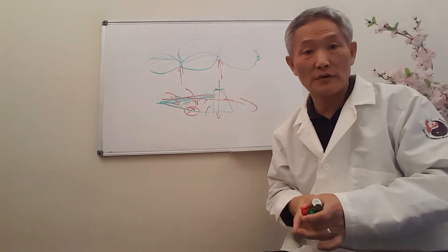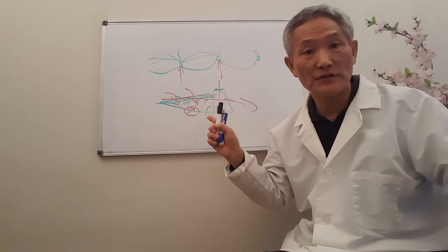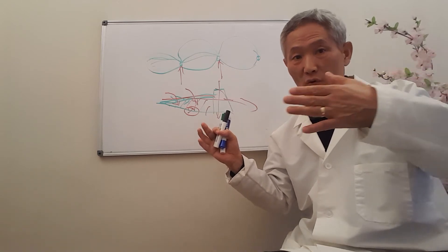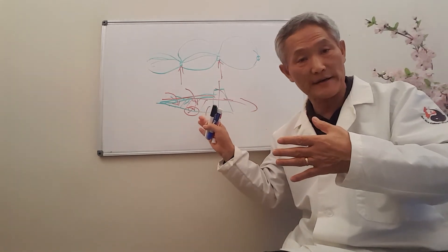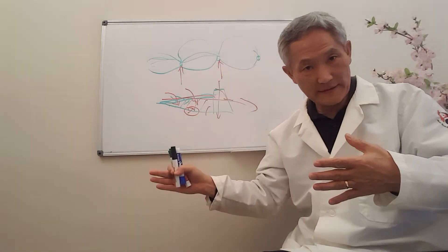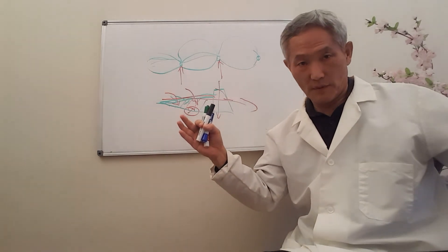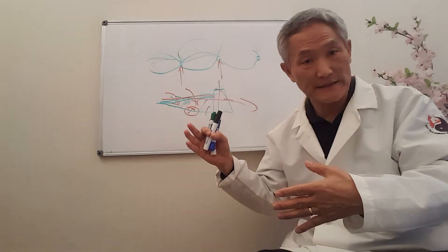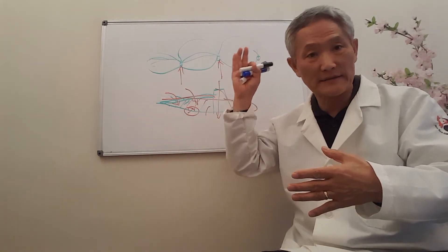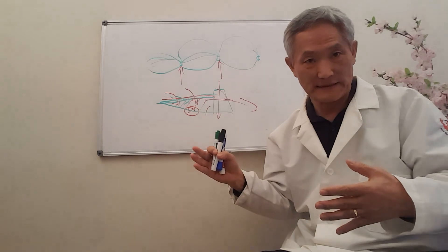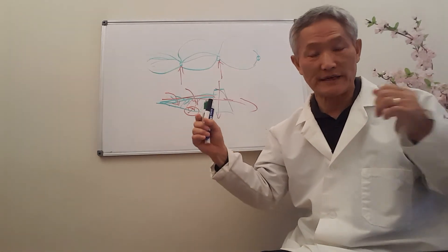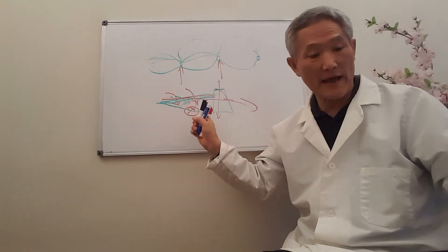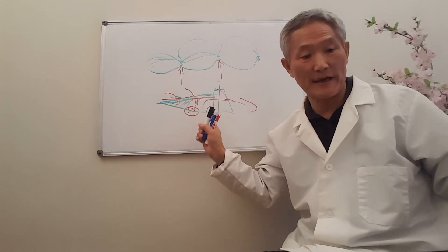So the needle's function is to let the blood into the painful area, then make it stop. So we call making flow tonification, and making it stop sedation. So we use these two methods to help with pain.